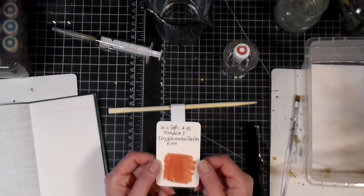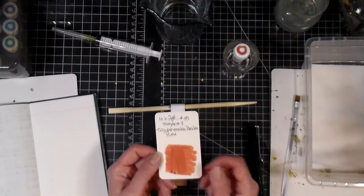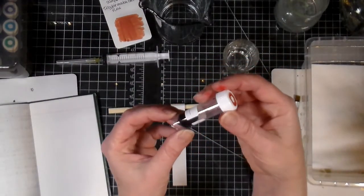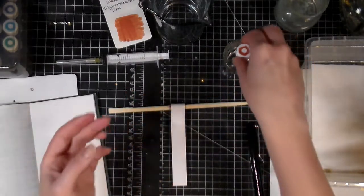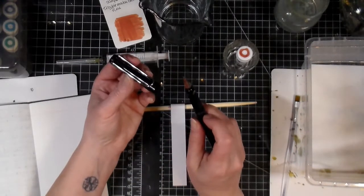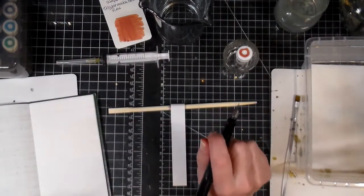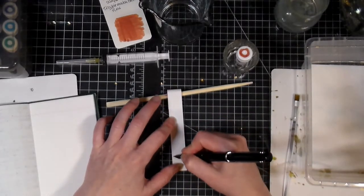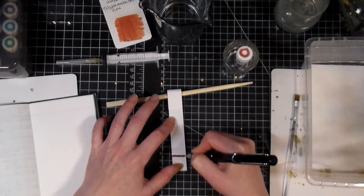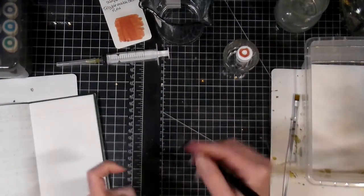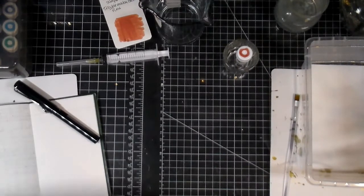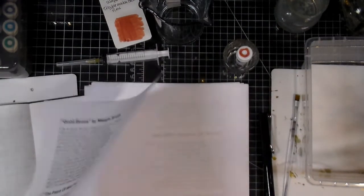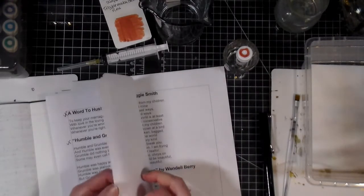So today we're here with ink flight number 39, the last sample which was sample 7, and it's the Troublemaker Basilica Red. This is my first time using this brand of ink. I don't have any other ink from them. I already prepped my Lamy - I haven't used Lamys for a long time and I figured why not use one for this. This one is a medium nib and I've already put ink all over my fingers because that's just the way I roll I guess. So we'll start off the chromatography and I forgot again to pull out a poem to use.